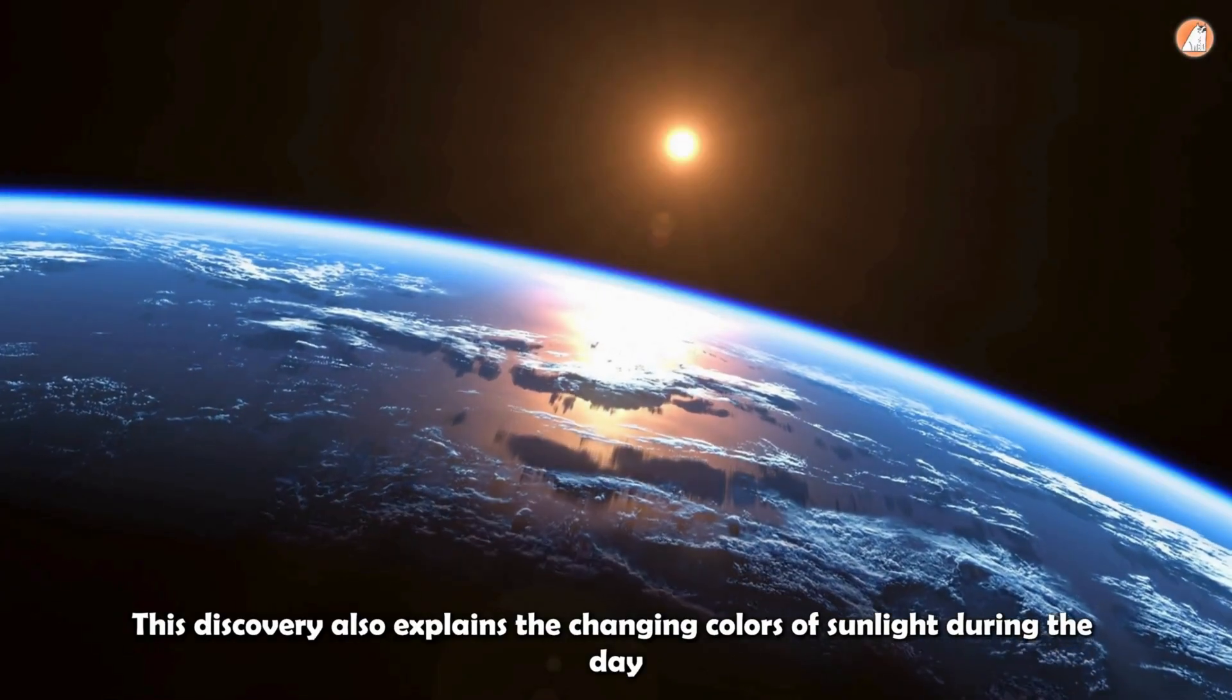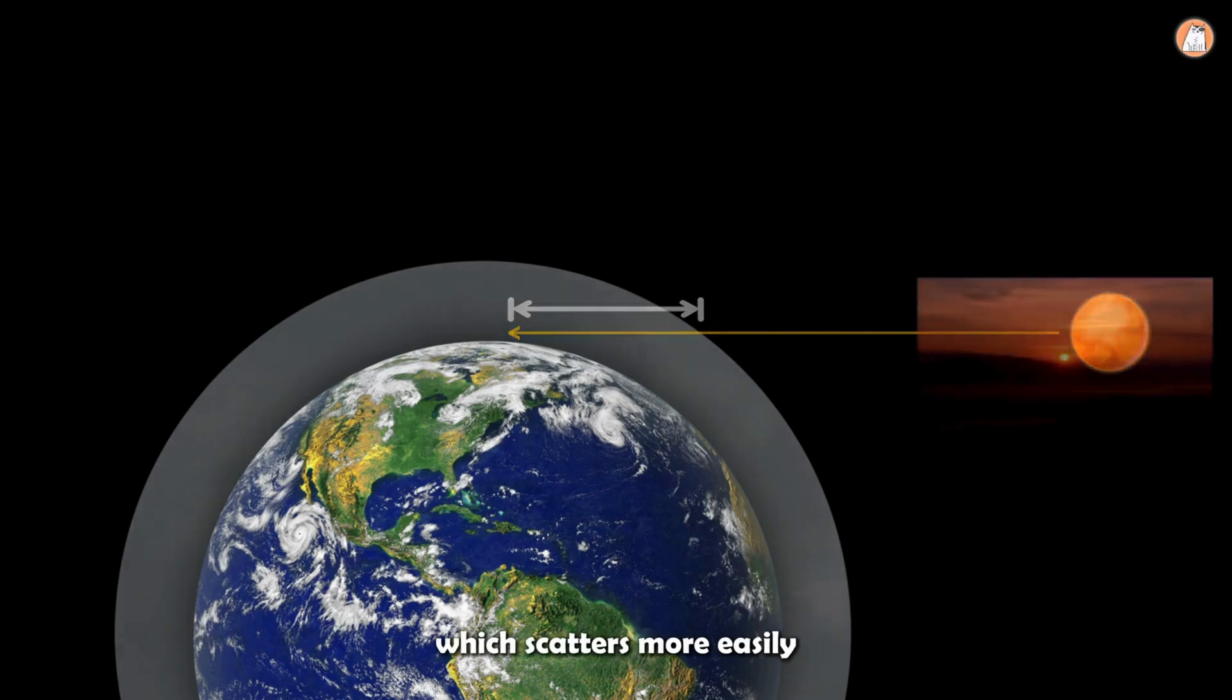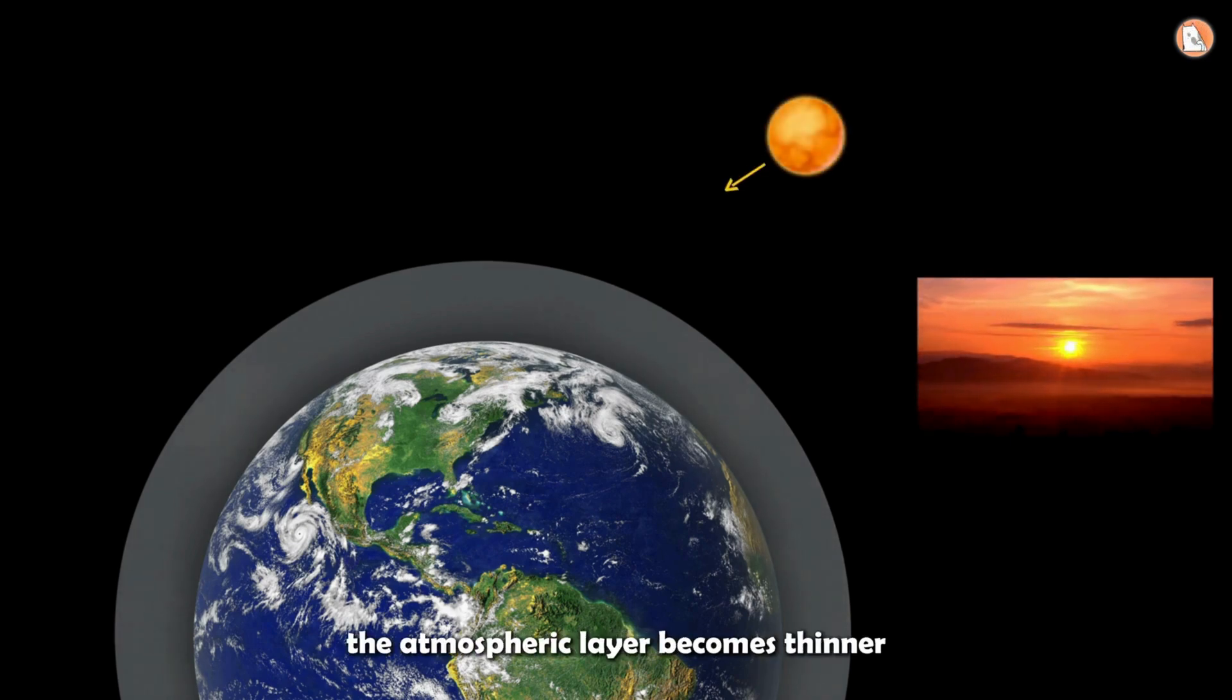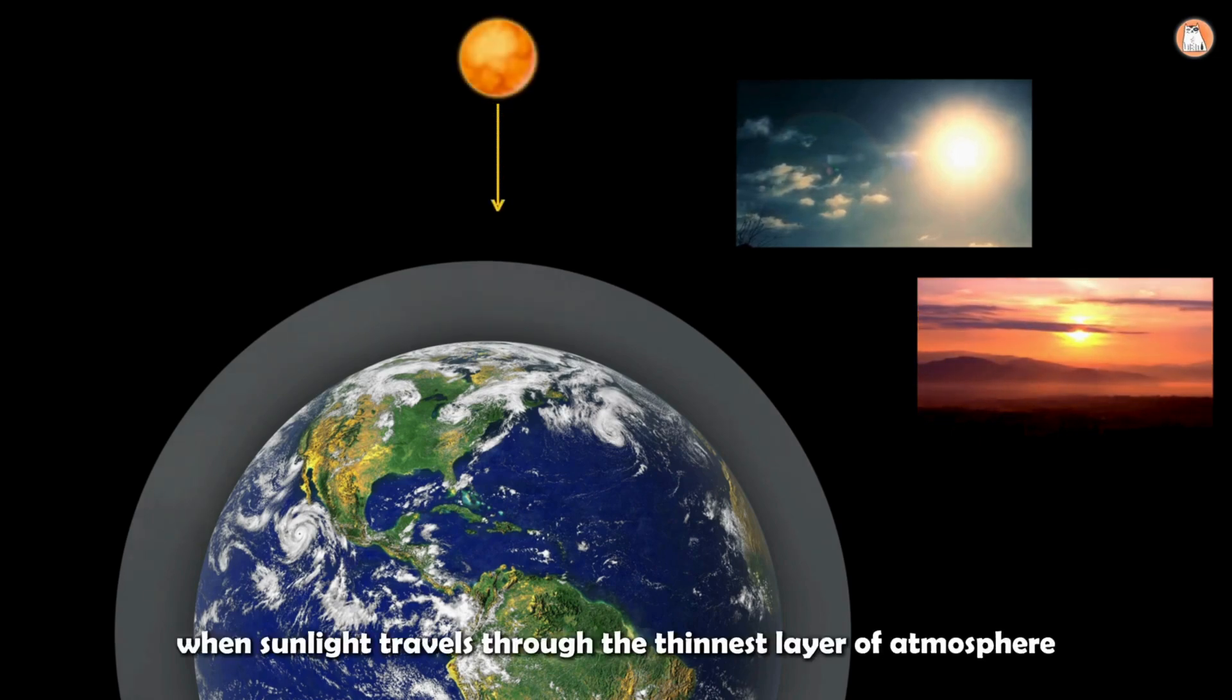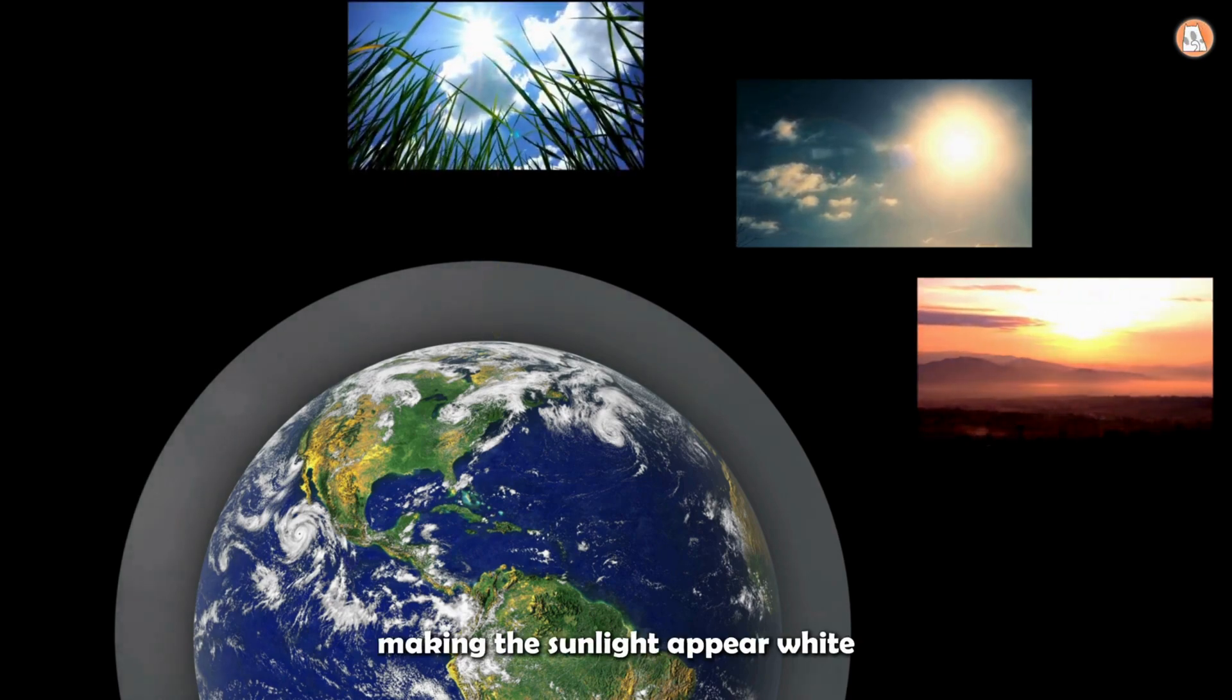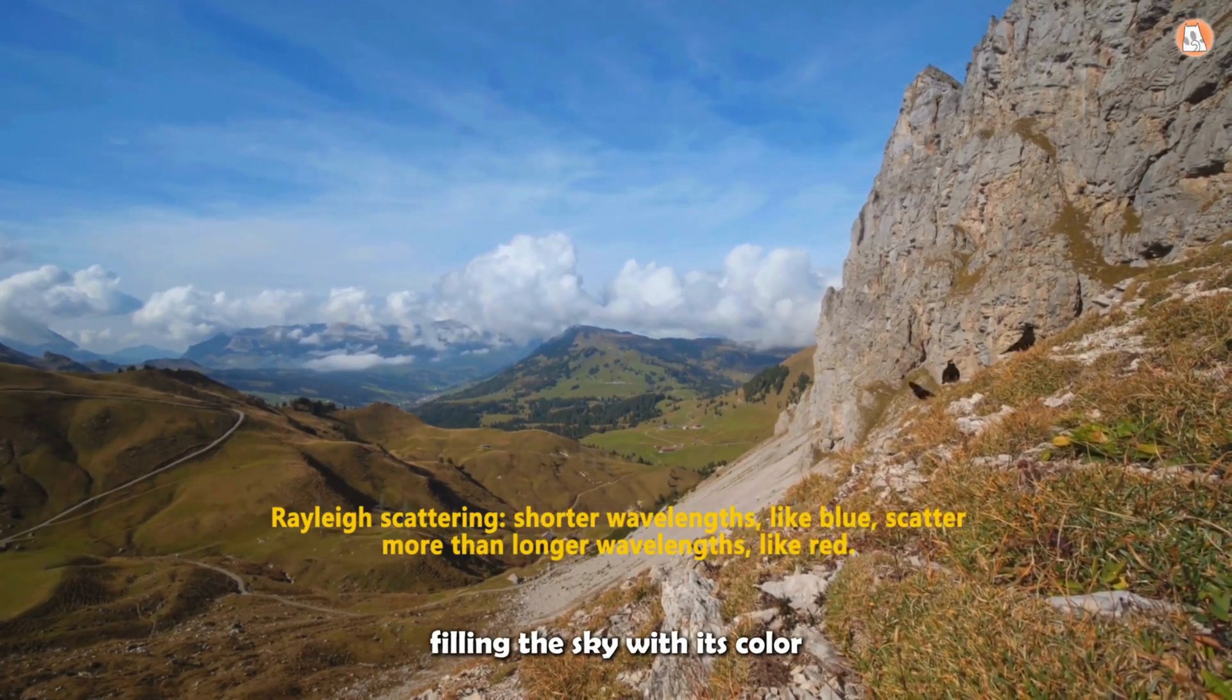This discovery also explains the changing colors of sunlight during the day. At sunrise, sunlight travels through a thicker layer of the atmosphere before reaching your eyes. Blue light, which scatters more easily, is mostly filtered out, leaving reddish hues. As the sun climbs higher, the atmospheric layer becomes thinner, allowing more blue light to reach your eyes and balancing the colors. By noon, when sunlight travels through the thinnest layer of atmosphere, all the colors combine, making the sunlight appear white. This scattering effect also explains why the sky looks blue. The atmosphere scatters blue light in all directions, filling the sky with its color.